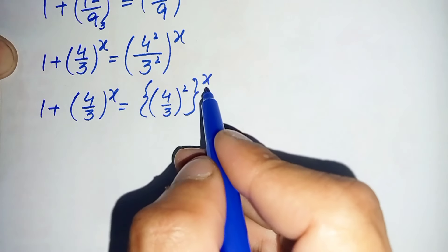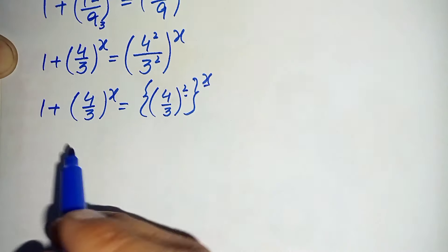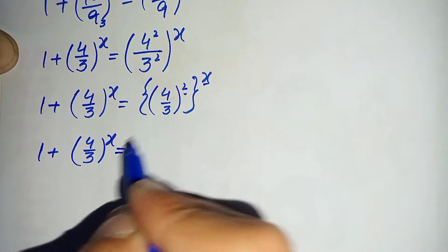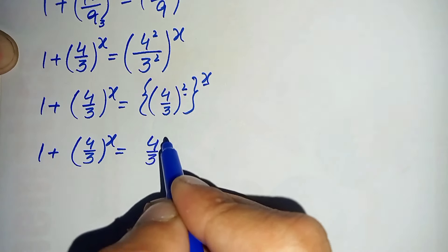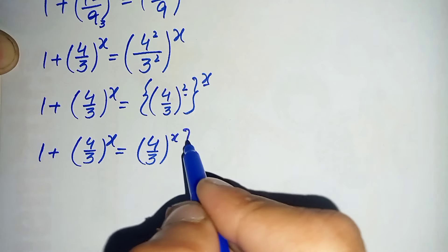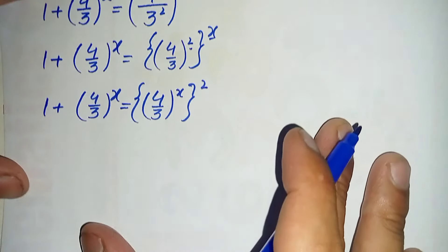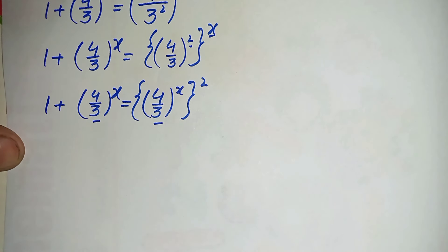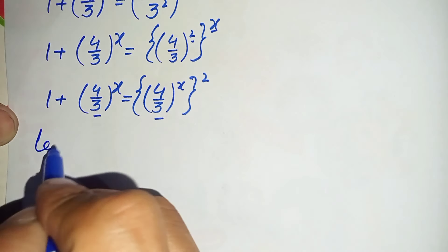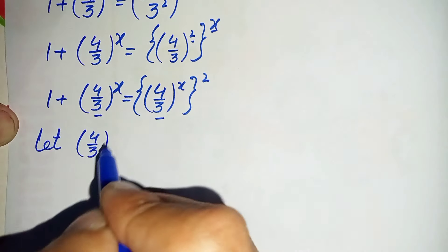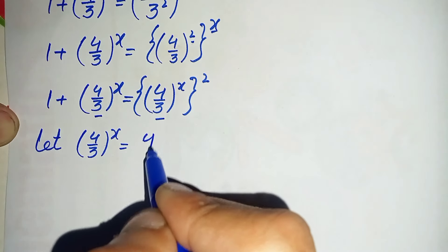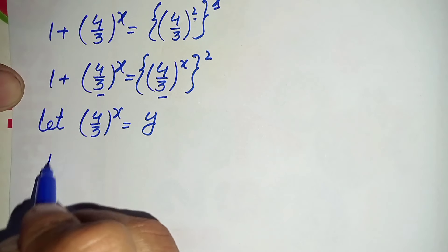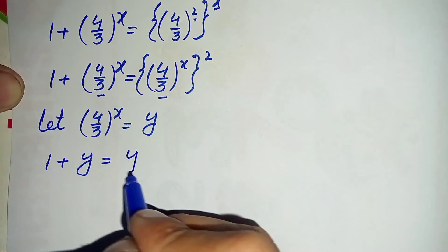Now next we will interchange the position of these two powers — we will move x inside and the 2 outside. So this will become 1 plus (4/3)^x is equal to (4/3)^(2x). Now we will make a substitution: let y equal (4/3)^x. Replacing in these two terms, this will become 1 plus y is equal to y squared.